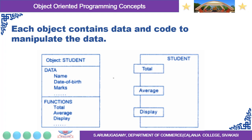This is an example for an object. These are the two different representations of the objects. The first one represents the object student. It contains the data: name, date of birth, and marks. It contains the functions: total, average, and display. In the right side diagram, we only present the functions — total, average, and display.